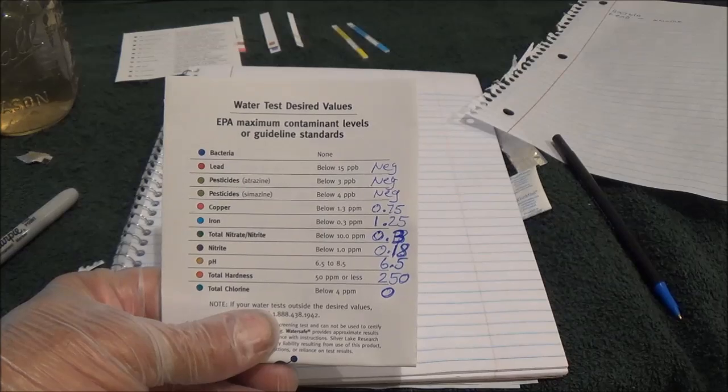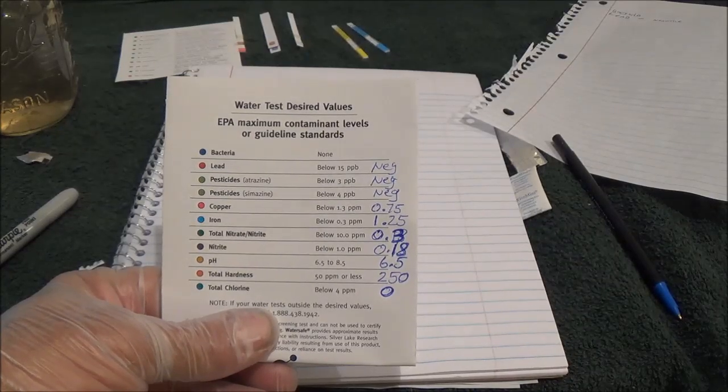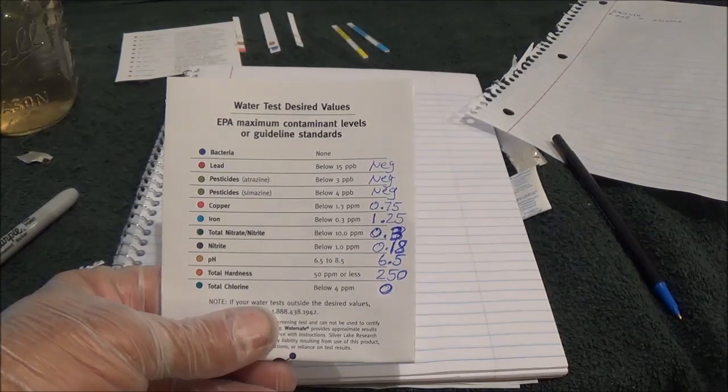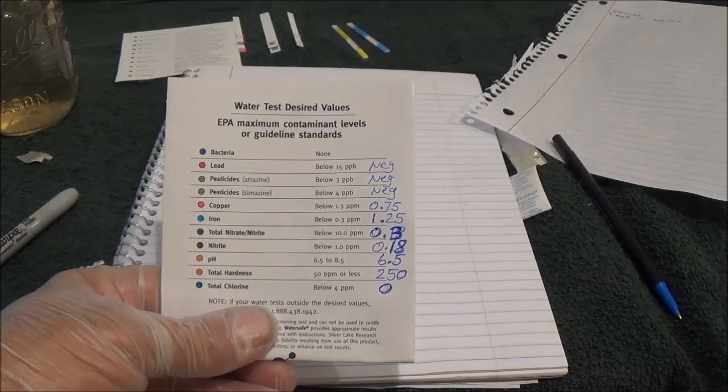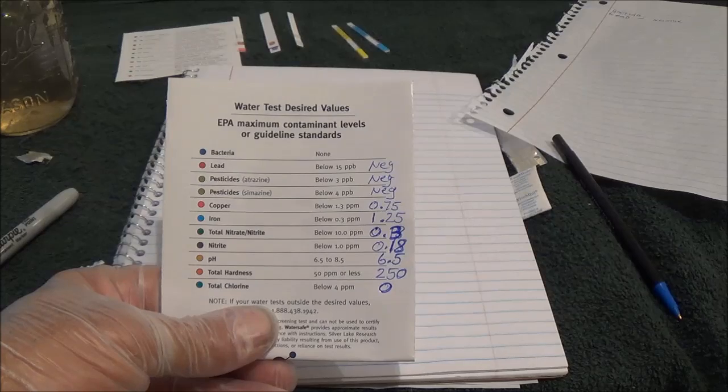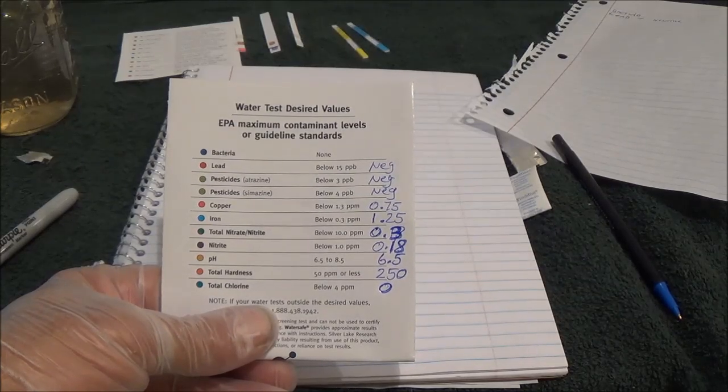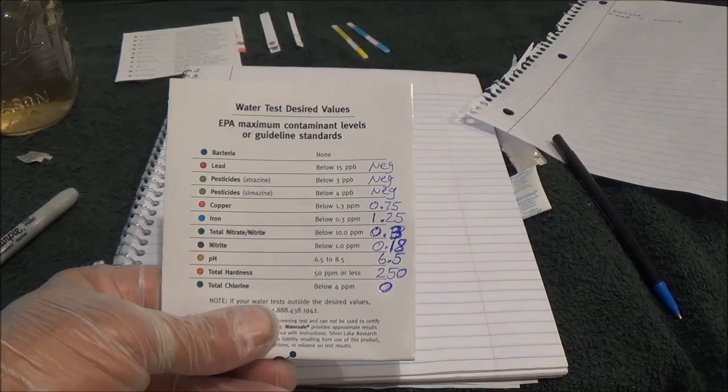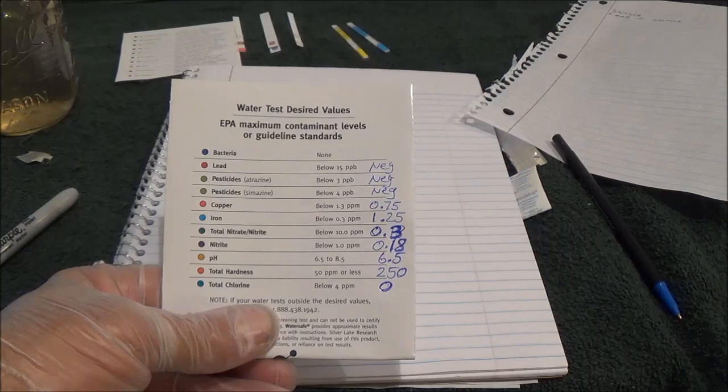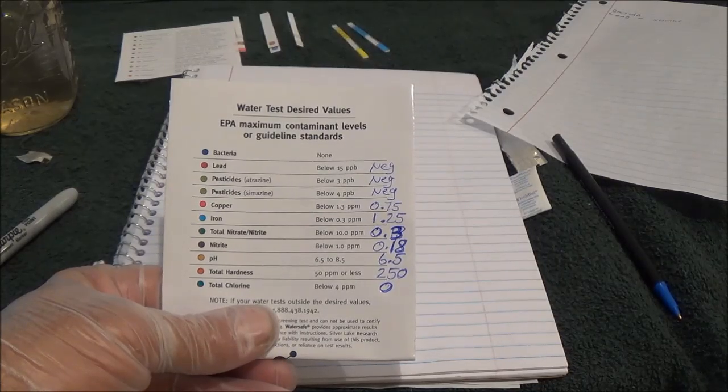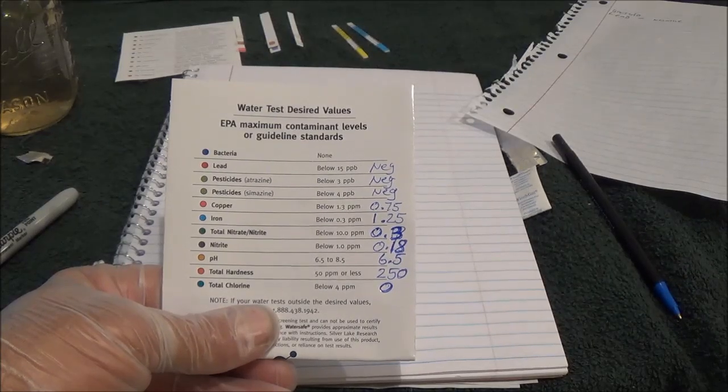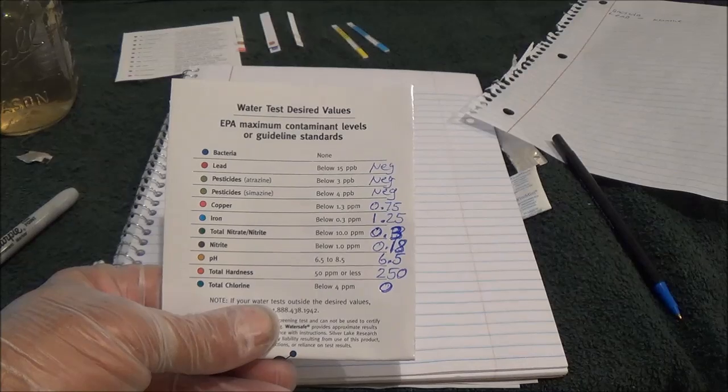Alright, so looking at our total results minus the bacteria, we're still waiting on that one. For lead, they suggested below 15 parts per billion. We were negative. Pesticides, the two kinds that it tested for, were supposed to be below 3 parts per billion and 4 parts per billion. Both of ours were negative. Copper is supposed to be below 1.3 parts per million. We were at roughly 0.75, we're good there. Iron is supposed to be below 0.3. I was at 1.25. We knew we were going to have high iron up there, and we did.